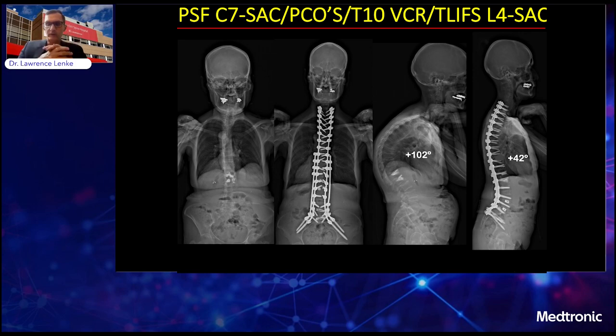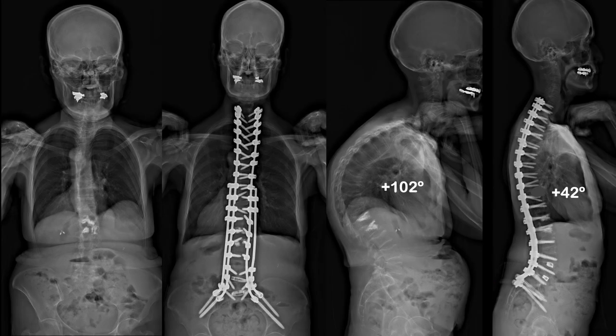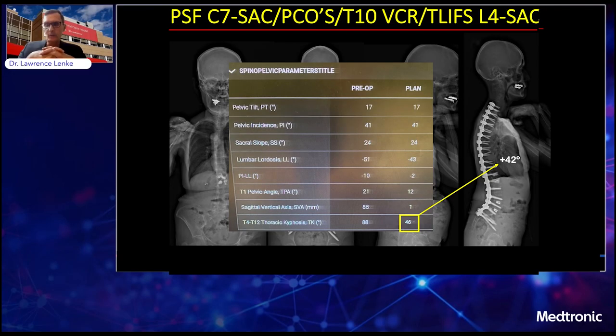Here are the pre- and post-op x-rays in the coronal and sagittal plane. The spine is nicely aligned in the sagittal plane with the T1-to-sacrum construct. We achieved 42 degrees of thoracic kyphosis — a few more degrees of correction than planned, but very much in line with the plan and a very nice ultimate sagittal alignment in the thoracic region and compensatory lumbar lordosis below.